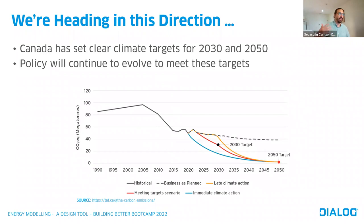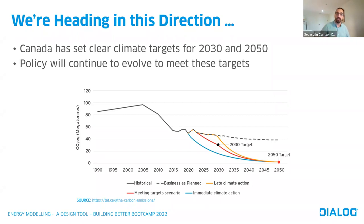We are seeing the effects this is having on climate and on the way we live and build buildings. Canada recognizes it, and at a federal, national, and municipal level, we've set up clear targets from a climate change perspective. We have 2030 targets and 2050 targets of net zero. What we're seeing is the way we're moving towards this is through policy, which continues to evolve as a way of hitting these ambitious targets.